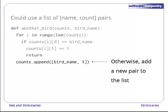Otherwise, if we reach the end of the list without finding a matching name, we add a new pair to the list consisting of the bird's name, and 1, since we now have seen the bird one time.